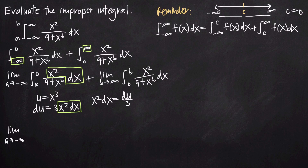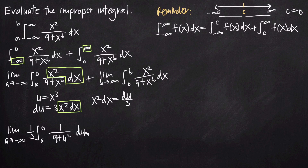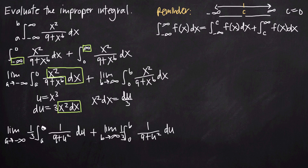Making the u-substitution, the integral becomes the limit as a approaches negative infinity of one-third times the integral from a to 0 of 1 over 9 plus u squared du, plus the limit as b approaches positive infinity of one-third times the integral from 0 to b of 1 over 9 plus u squared du. Note that the limits of integration still relate to x at this point, so we'll need to back-substitute before evaluating.